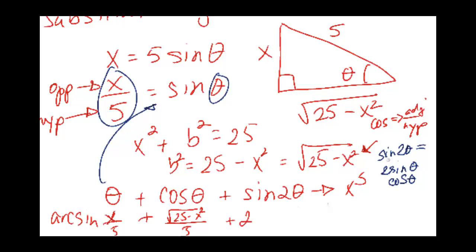So we have the 2 from the identity right here and then we have sine theta which is x over 5 and then times cosine theta, which is root 25 minus x squared over 5.